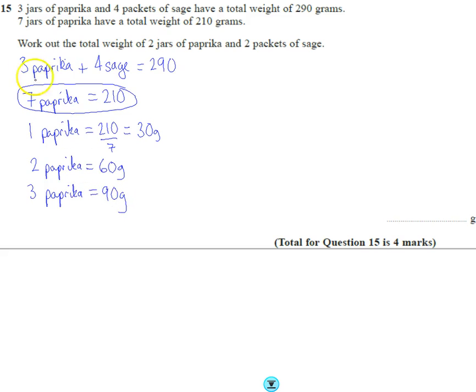Well, because if I compare it to here, it's 3 paprika at 90 grams. So let's do 290, let's take those paprika off which we know weighs 90. I'm left with 200 grams left. So that means that 4 sage weighs 200 grams.